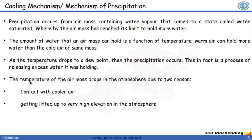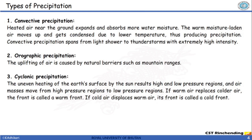The temperature in an air mass can drop in the atmosphere for two reasons. The most common are contact with cooler air, or the air mass may get lifted up to a very high elevation in the atmosphere. We know that in the troposphere, the layer just above the land surface, temperature decreases as altitude increases. So once the heated air mass gets lifted, it reaches a point where the temperature drops to the dew point and precipitation occurs. There are three types of precipitation: convective, orographic, and cyclonic.